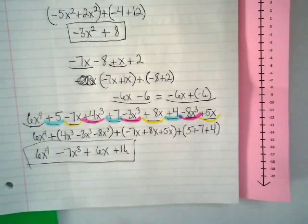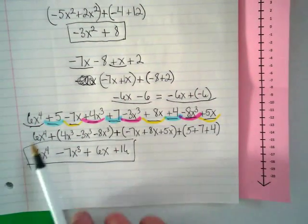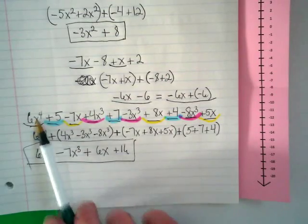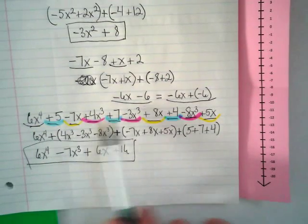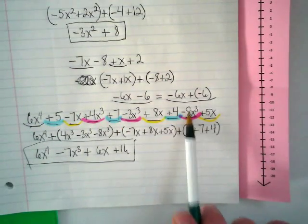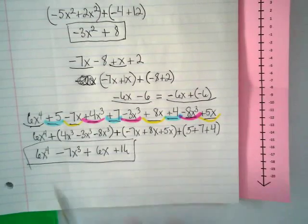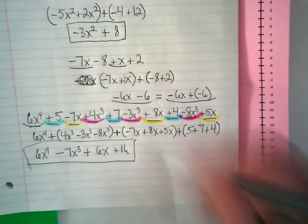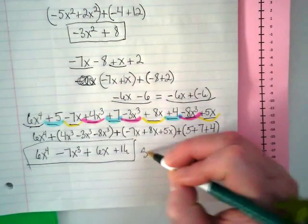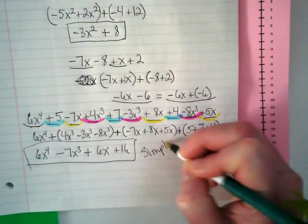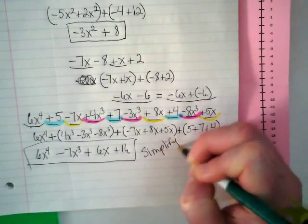Let's count how many terms were in the original problem: ten terms. We came down to four. Do you guys see now why I don't say 'solve' these — we call this 'simplify,' because we don't know what x is. We just have it as simplified as we possibly can without knowing x.